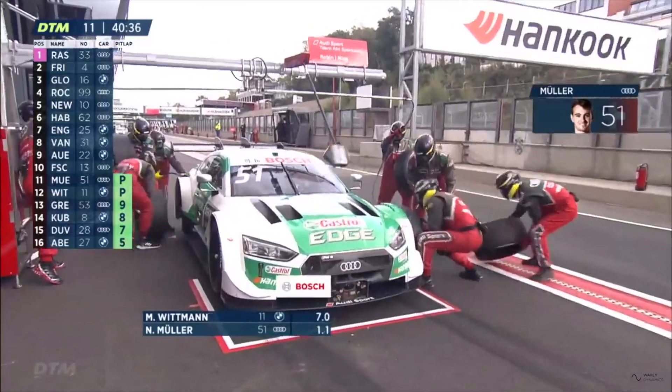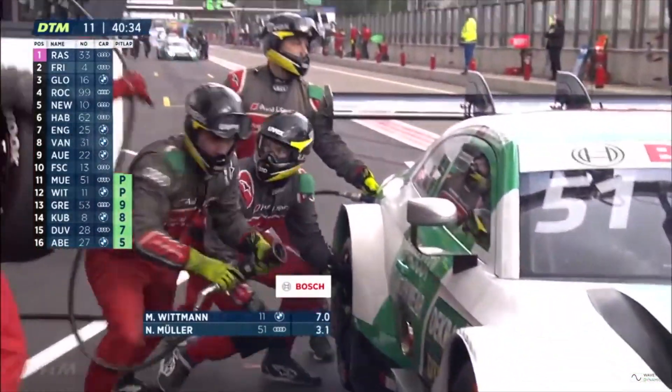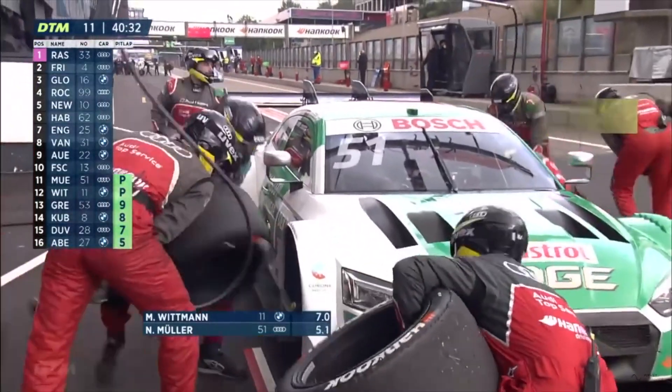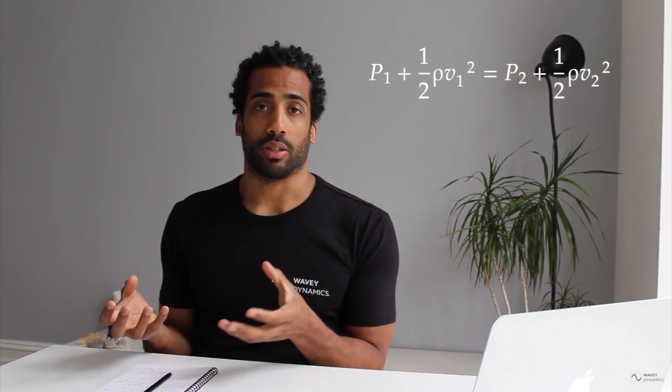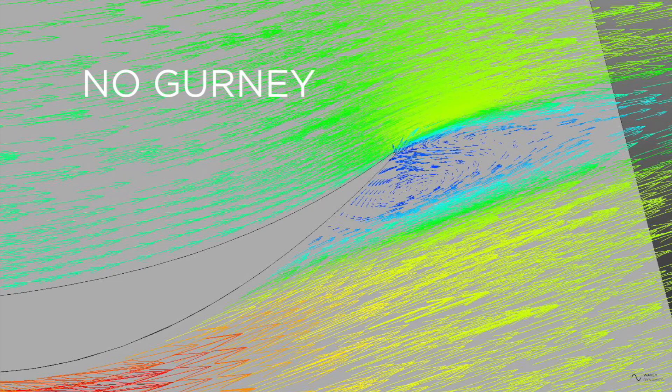By protruding above the boundary layer of flow over the upper high-pressure surface of the airfoil, the gurney flap has the effect of slowing down the airflow. As you'll probably know through Bernoulli principles, when you slow down the air to maintain continuity, you increase the pressure. Also, by changing the pressure coefficients around the trailing edge of the airfoil, they have the effect of reducing separation on the low-pressure underside of the airfoil.